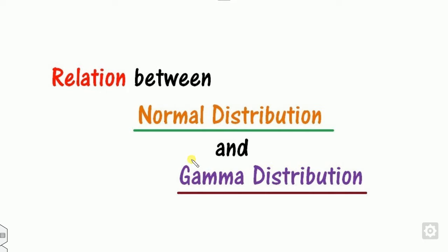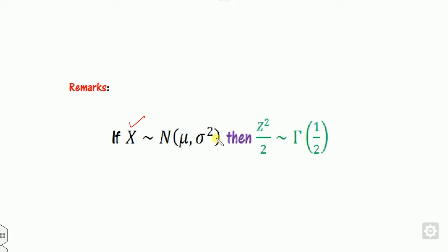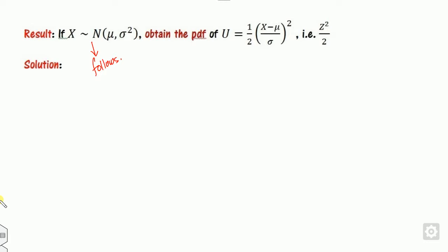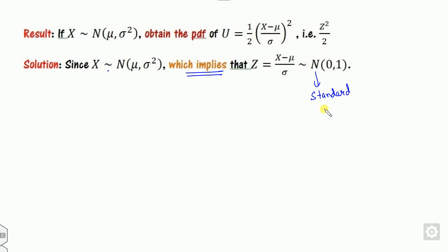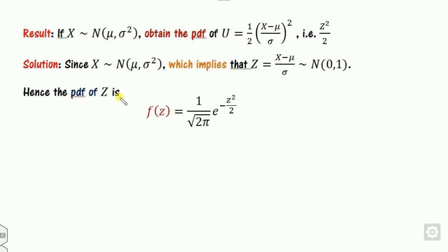Now let us look at the relation between the normal distribution and the gamma distribution. If x follows a normal distribution, does z squared over 2 follow a gamma distribution, where z equals (x minus mu) divided by sigma is the standard normal variate? We will prove this result. If x follows the normal distribution, then z follows the standard normal distribution with mean 0 and variance 1.